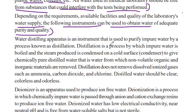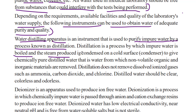The two instruments used for water purity and quality are: Water Distilling Apparatus — an instrument used to purify water by a process known as distillation. The impure water is boiled and the steam produced is condensed on a cold surface to give chemically pure distilled water.